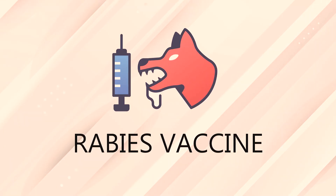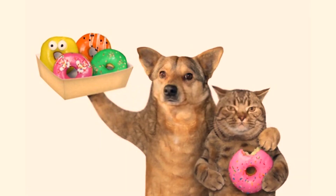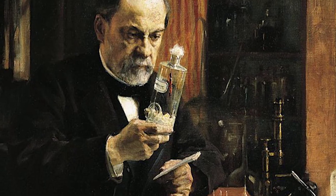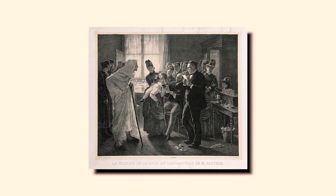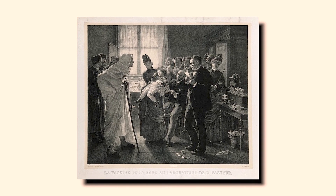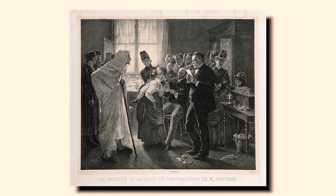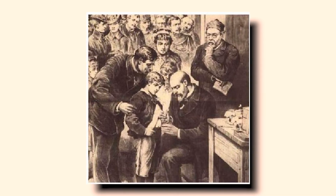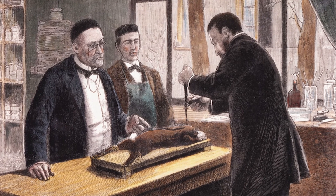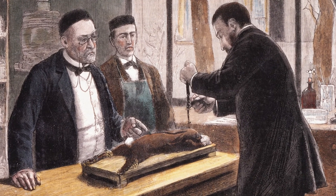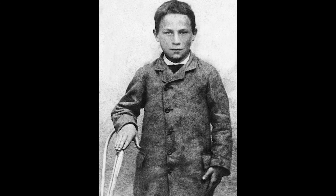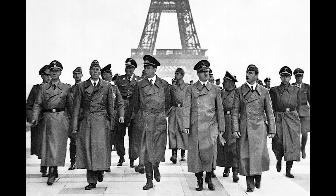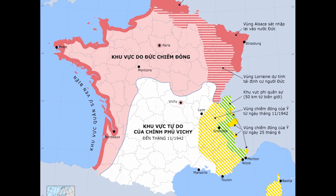Before vaccines, a bite from a rabid animal meant certain death. But on July 6, 1885, Louis Pasteur vaccinated the first human against rabies. A nine-year-old boy named Joseph Meister was rushed to Pasteur after being bitten by a rabid dog. Though Pasteur had never successfully tested his vaccine on humans, he gave Joseph 13 injections containing a weakened rabies virus. Because he was vaccinated before symptoms appeared, the disease never developed — Joseph Meister, the first recipient of the rabies vaccine, survived. Meister ended up working as a janitor at the Pasteur Institute, but sadly killed himself in 1940 shortly after Germany invaded France.